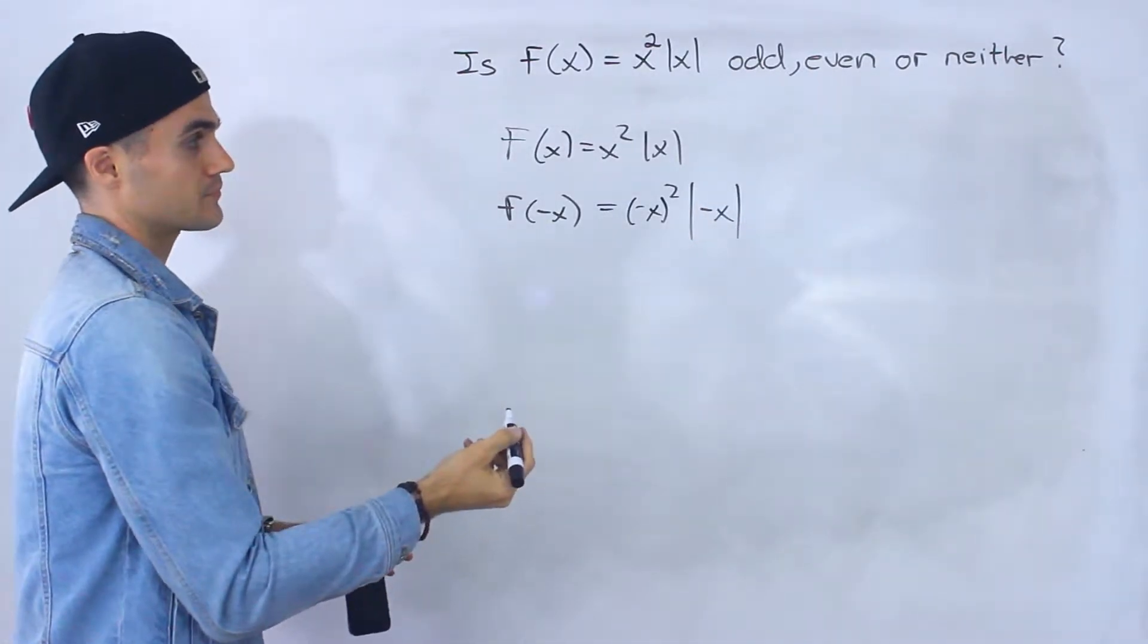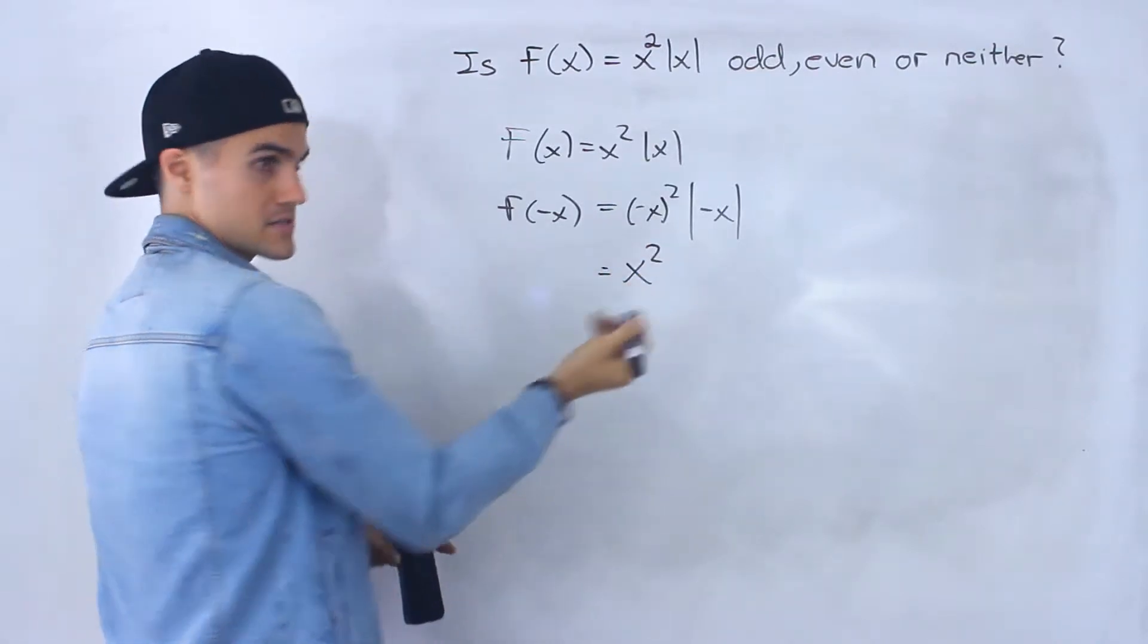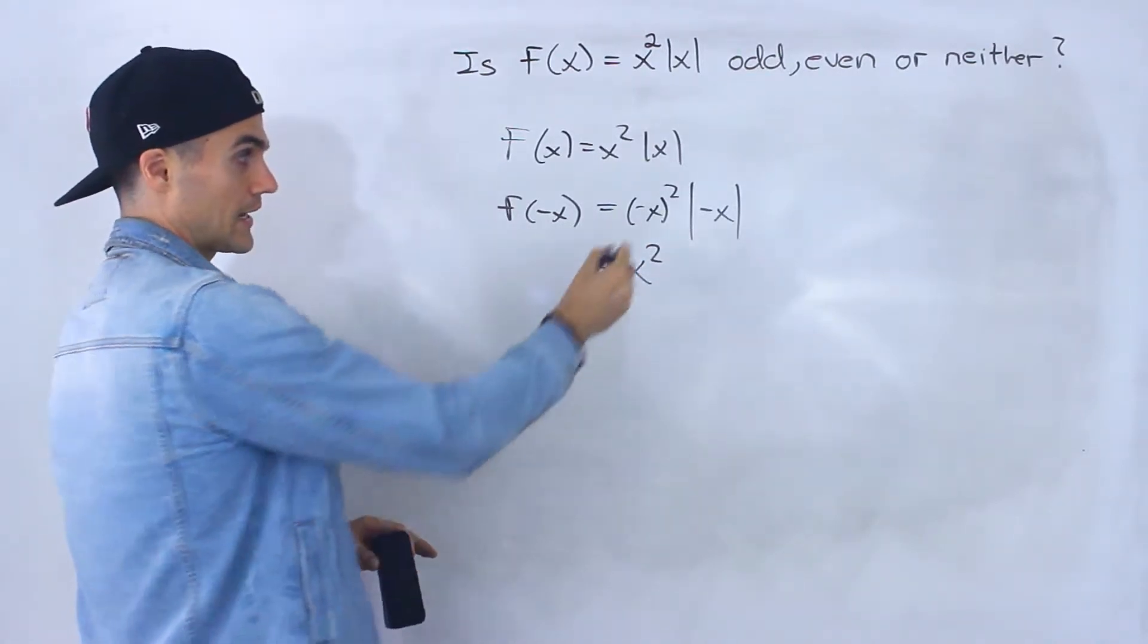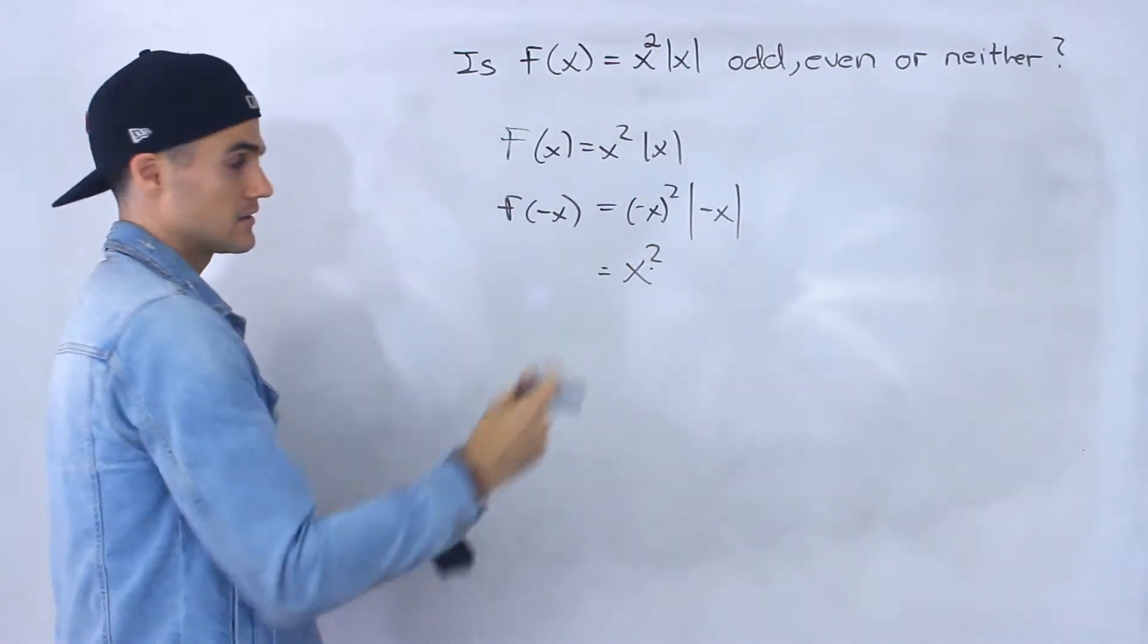So plug in negative x here, so we'll have negative x squared times the absolute value of negative x. Negative x squared, we know that that's positive x squared, right?